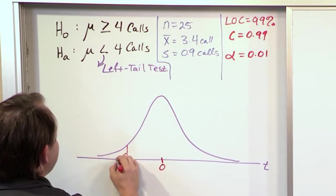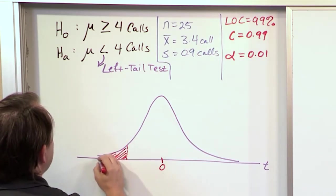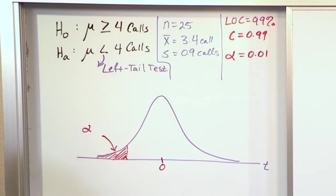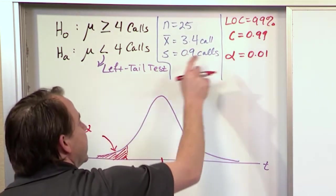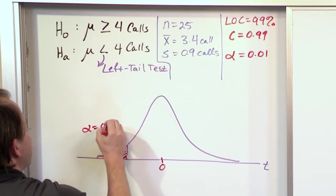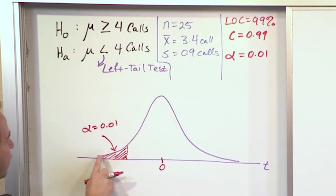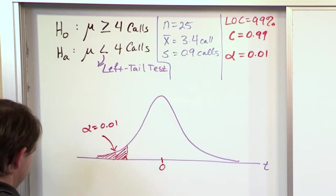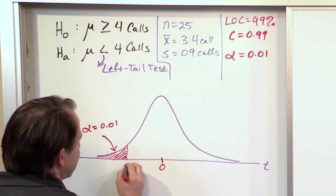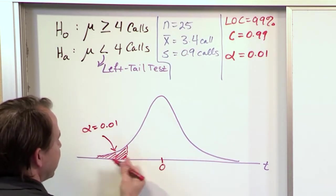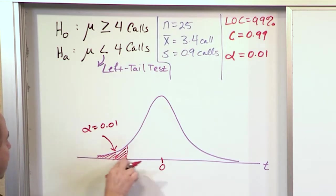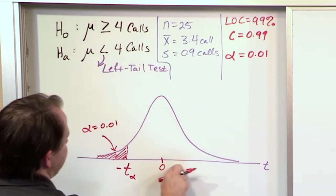This is a left-tail test, and the center of the T-distribution is always zero. Since it's a left-tail test, we grab a little region in the left-hand tail and shade it. This shaded region equals alpha, which is 0.01. The value of T at that boundary — since all values to the left are negative — is called negative T sub alpha.